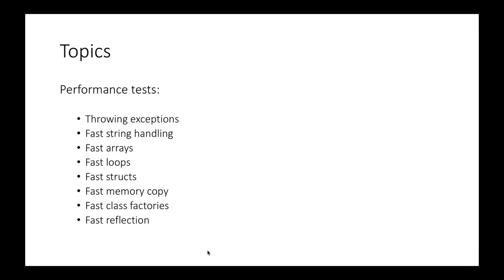Let's get started. The topics I want to cover are: the overhead of throwing an exception, how to manipulate strings in C#, different types of arrays and their performance, the difference between a for and a foreach loop, structs versus classes, copying a block of memory using different techniques, and finally — saving the best for last — how to instantiate classes and do basic reflection in an extremely fast manner using code that emits custom CIL instructions, essentially compiling C# on the fly to do super fast reflection.